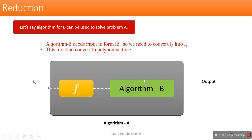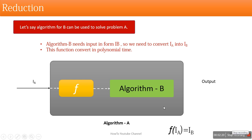We are discussing decision problems here, so the output will be yes or no. If algorithm B outputs yes, then the final output for problem A will also be yes. This function takes input in IA format and converts it into IB format, and this conversion should take only polynomial time. Efficient algorithms take only polynomial time, so this conversion function runs in polynomial time. If we think of algorithm A as a black box, it simply takes IA and provides output.